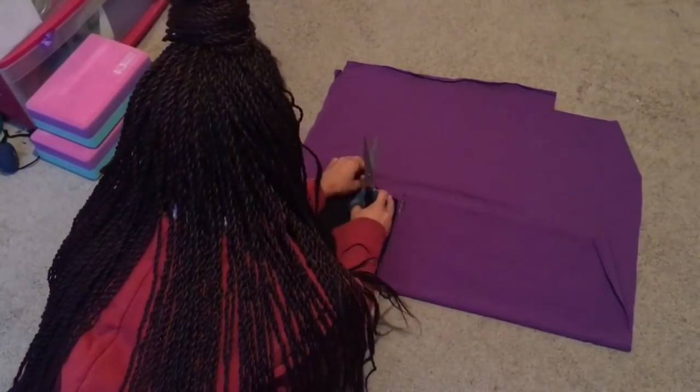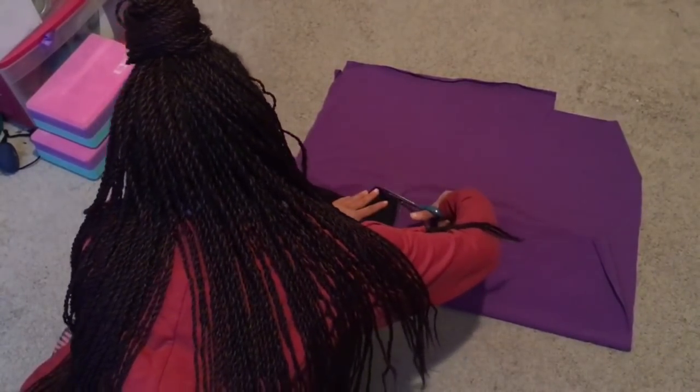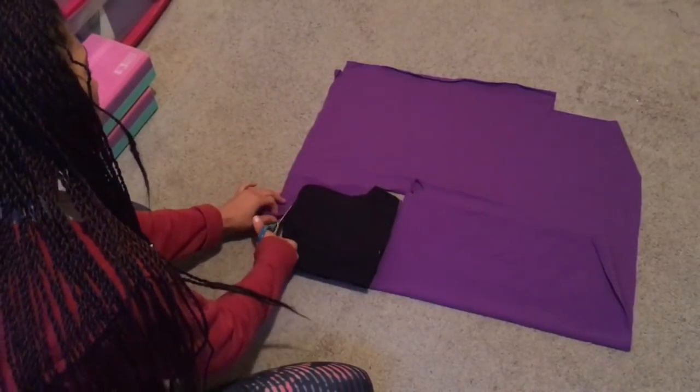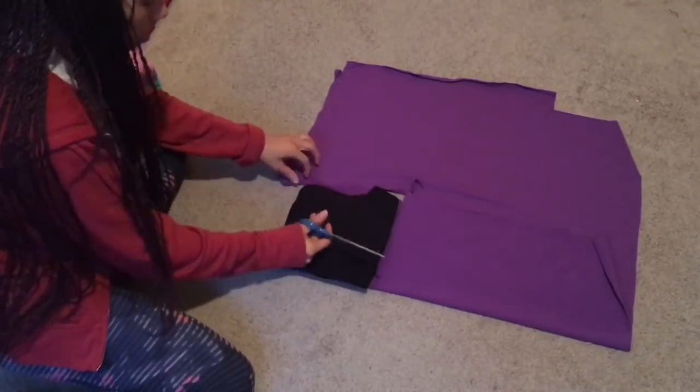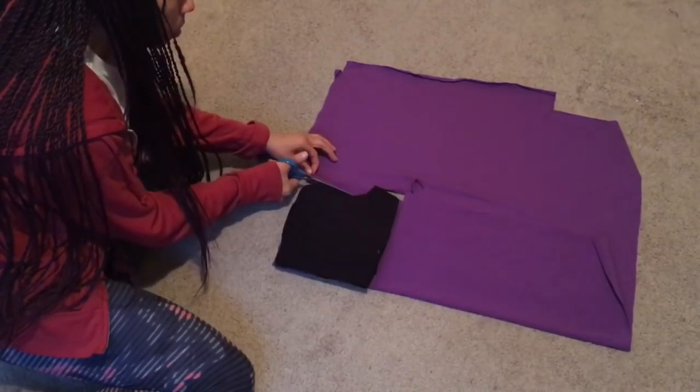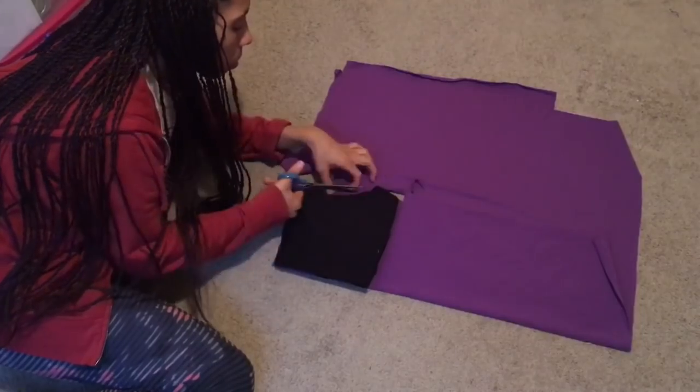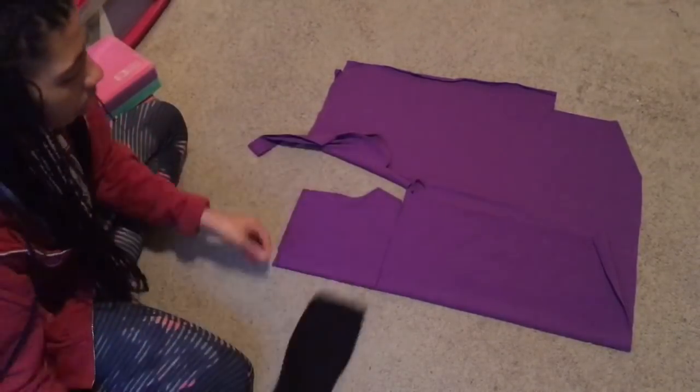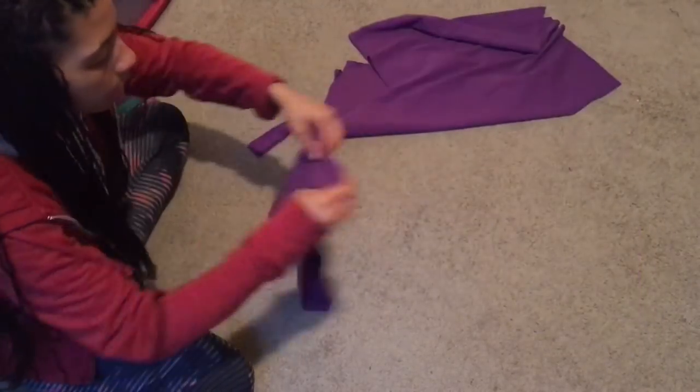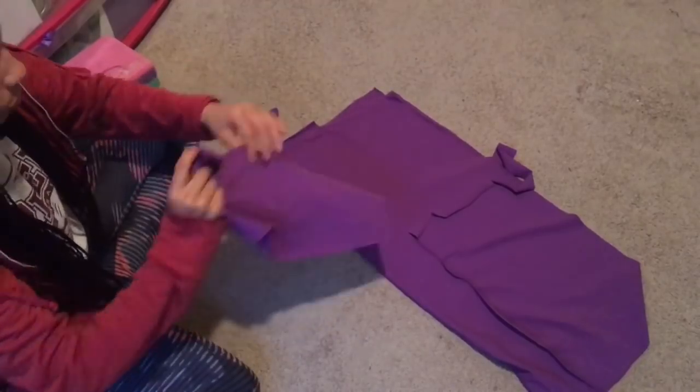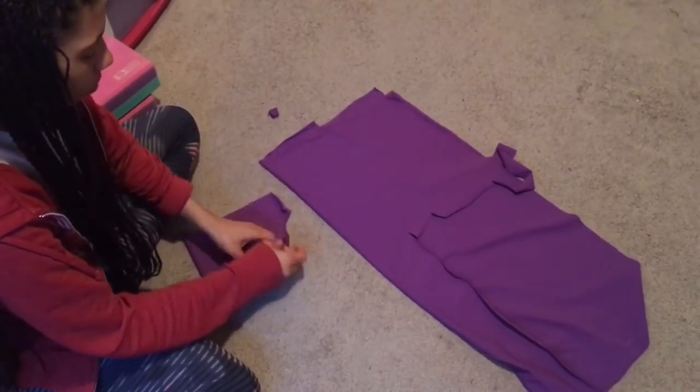You're gonna make these shorts. Now depending how short you want them, some people might not really want booty shorts, so just don't fold it up as much when you're folding your tights. When you're done, you're gonna have one piece that looks like this - a front and back piece. We're not going to sew any side seams.